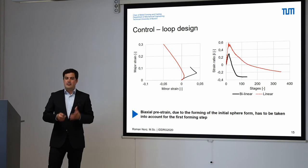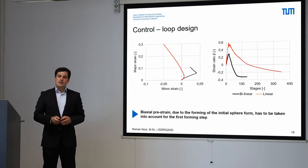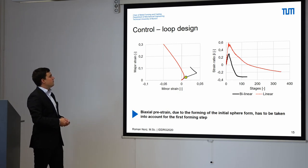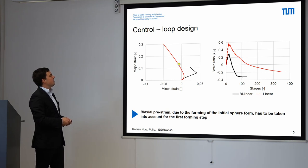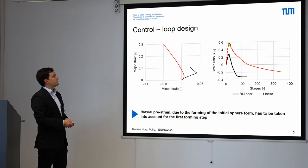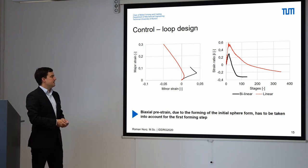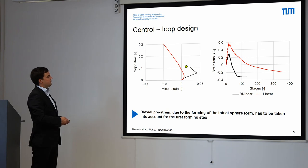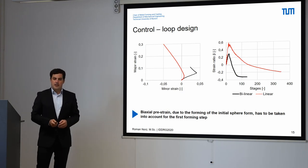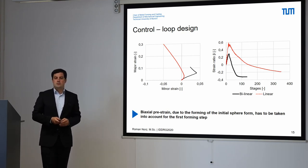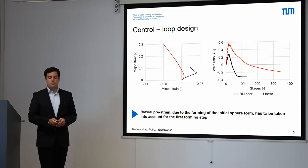Another effect we have to take into account, and this is the reason why we have to use two databases, is that due to the Nakajima punch we have an initial biaxial preforming. This is especially the case if we want to have a uniaxial forming step in the beginning. We can see here that we have a positive minor strain and then we go to negative values, meaning in the beginning we have a positive strain ratio which then goes into the uniaxial regime. If we have a uniaxial step in the second forming step, we go a lot further left and can reach the negative strain ratio a lot faster. Due to the biaxial pre-strain, we use two different databases, and in our control loop we check if we are in the first forming step or not.